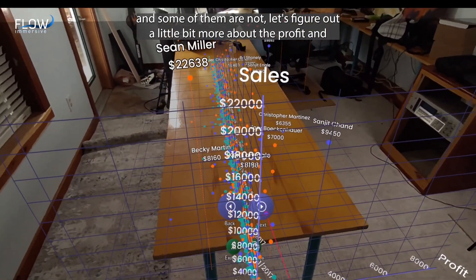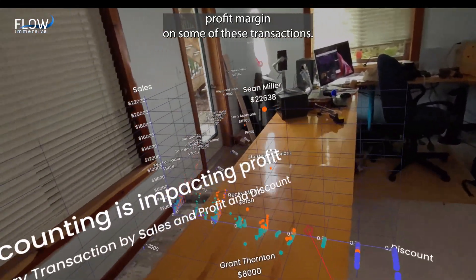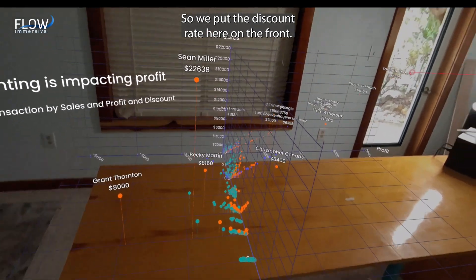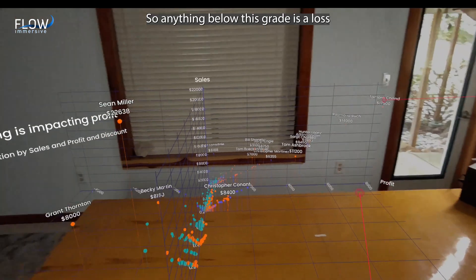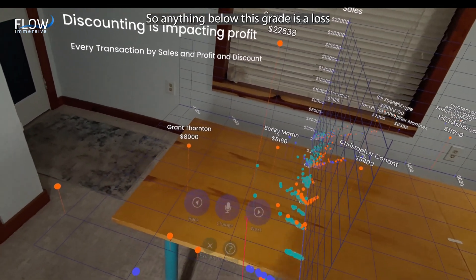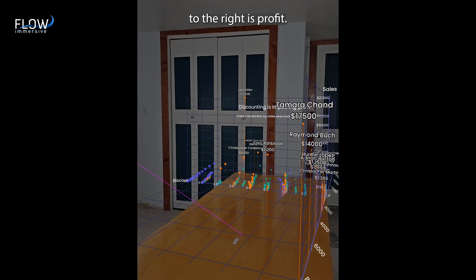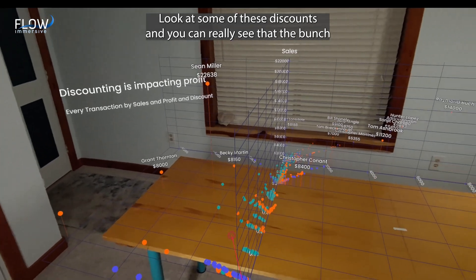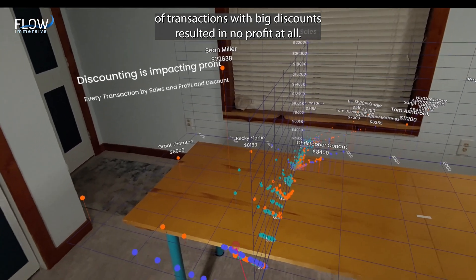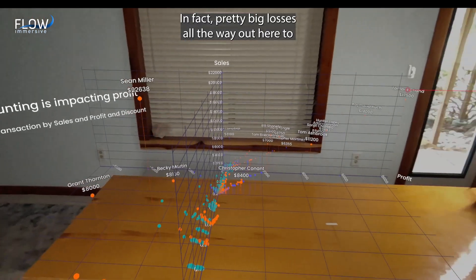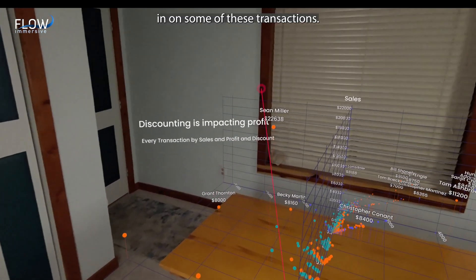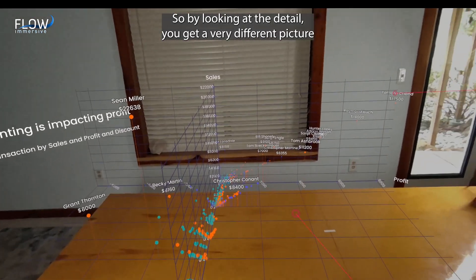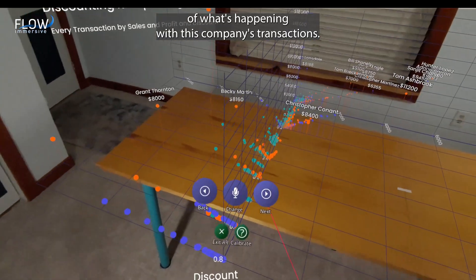Let's figure out a little bit more about the profit and profit margin on some of these transactions. So we put the discount rate here on the front, we have sales and we have profit across the side. So anything below this grid is a loss, to the right is profit. Look at some of these discounts and you can really see that a bunch of transactions with big discounts resulted in no profit at all. In fact, pretty big losses on some of these transactions. So by looking at the detail, you get a very different picture of what's happening with this company's transactions.